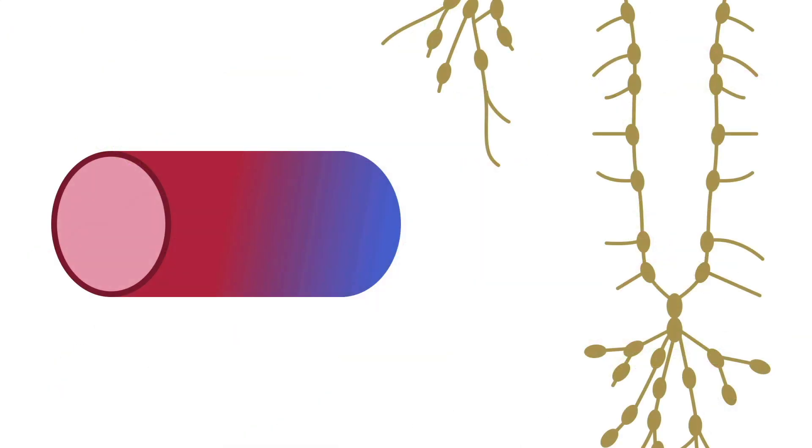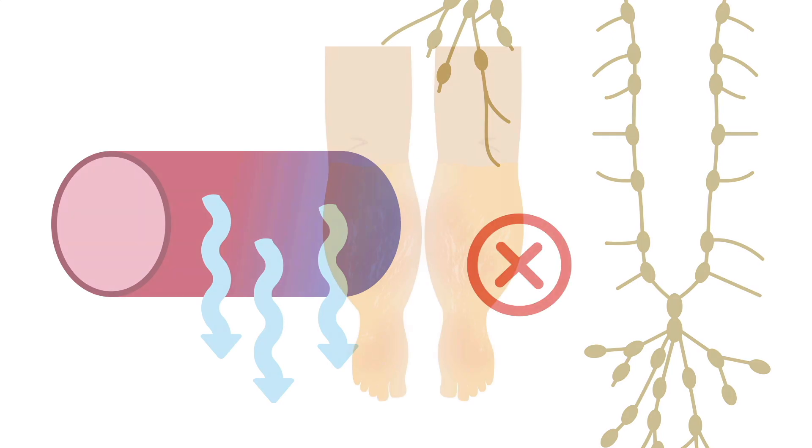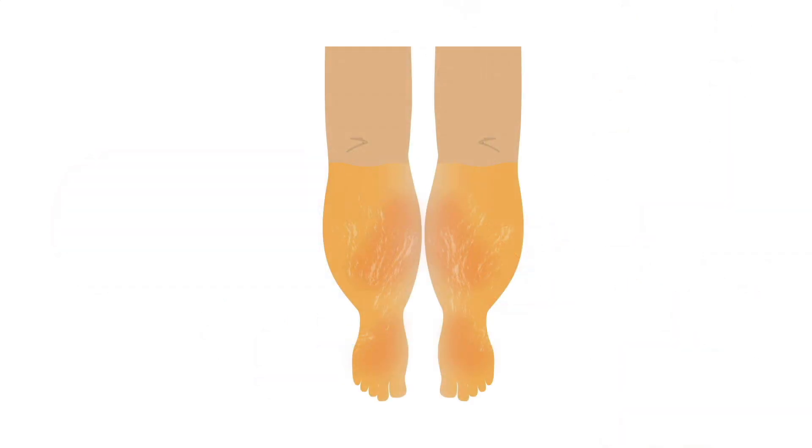Finally, remember that there is net filtration of fluid across normal capillary membranes and this fluid returns to the vascular space via the lymphatic system. If there is lymphatic obstruction, the patient develops lymphedema.